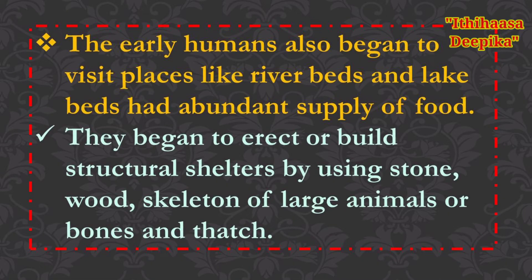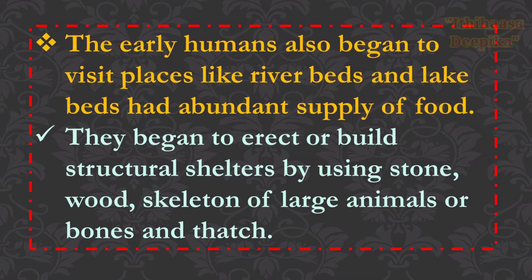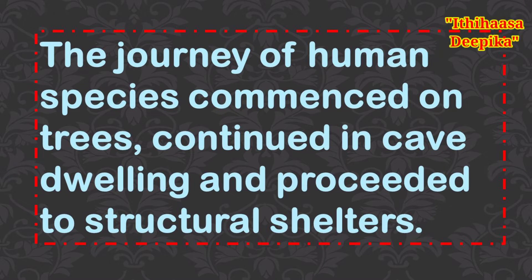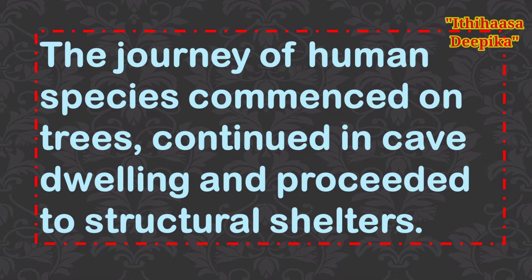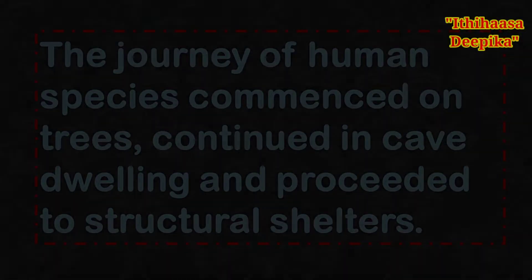The early humans also began to visit places like riverbeds and lake beds, which had an abundant supply of food. They began to erect and build structural shelters using stone, wood, skeleton of large animals or bones, and thatch. The journey of human species commenced on trees, continued in cave dwelling, and proceeded to structural shelters like modern buildings.